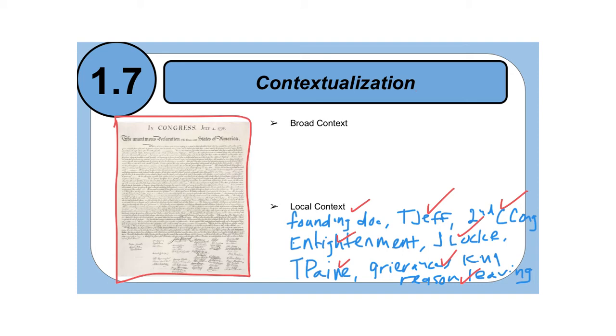That would be a very good local context, telling me what this document is. Clearly, you know exactly what this document is. You know it's a founding document who wrote it, Thomas Jefferson, where they were, Second Continental Congress. It's influenced by the Enlightenment, such as John Locke and Thomas Paine, and the document listed grievances against the king and justified the reasons why they were leaving. That's the full definition of what the document is. That answers the question of what this document is. And that's local context.